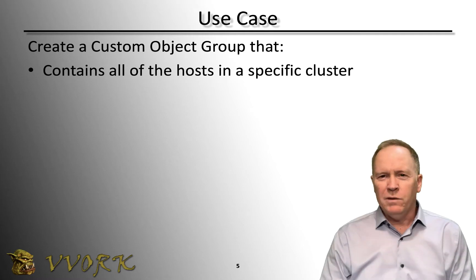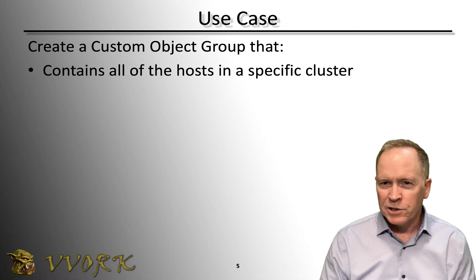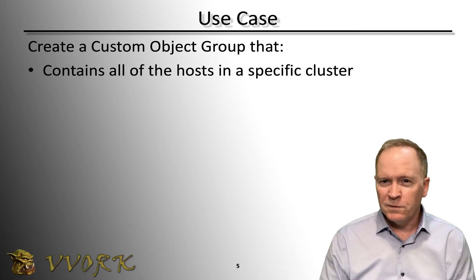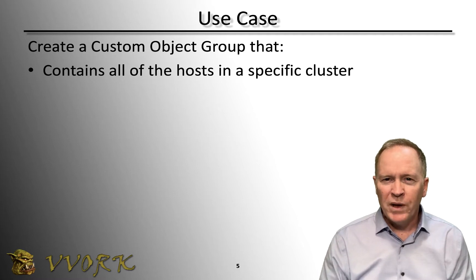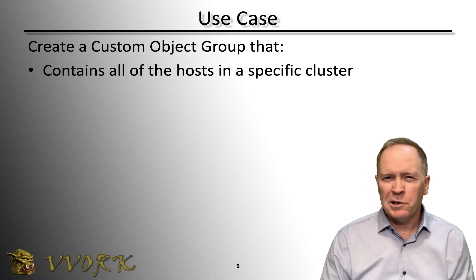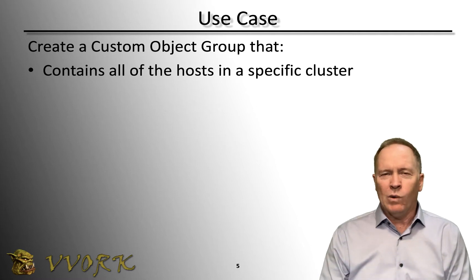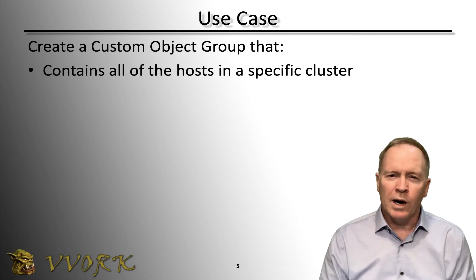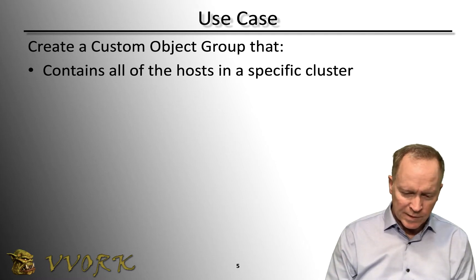Now we know a bit about custom object groups, it's time to start doing some demonstrations. In this video and the following videos, I'm going to handle a number of different use cases. Starting with this video, we're going to learn how to create a custom object group — one that uses the relationship setting — in order to create a group of all the hosts that belong to a specific cluster. So let's go look in the lab environment.